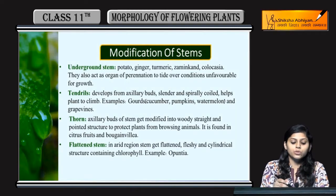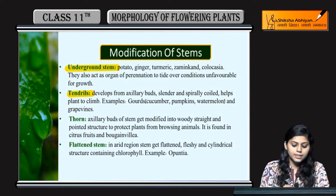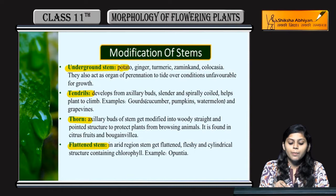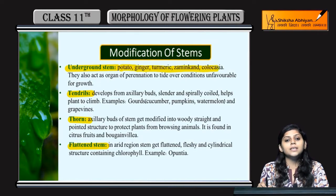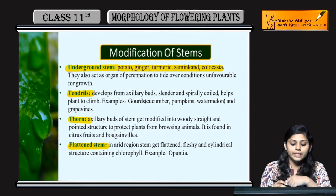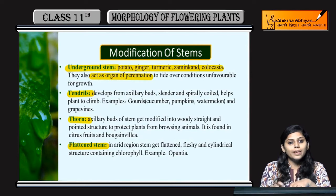Aisi modified stems hoti hai: underground stems, tendrils, thorns, and flattened stems. Underground stems ke examples hain potato, ginger, turmeric, zamikand, colocasia. Ye storage kerti hain under the ground. They also act as organs of perennation taaki woh unfavorable conditions ko tide over kar saken growth ke liye.